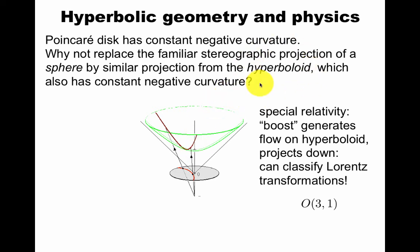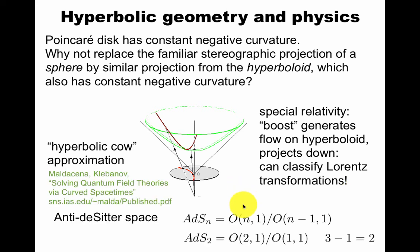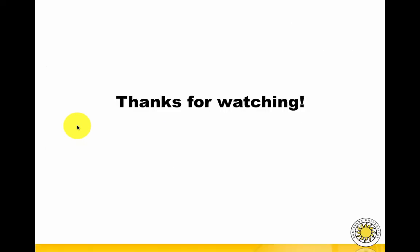In fact, the Poincaré disk, once we accept that it has constant negative curvature, we can have done a projection from a hyperboloid instead of the sphere. You get the Lorentz group this way, as is discussed in great detail on the Wikipedia page about the Poincaré disk. You can go even further and say I can form a homogeneous space by forming equivalence classes in this Lorentz group. That gives me anti-de Sitter space, which is used nowadays for the so-called hyperbolic cow approximation or the anti-de Sitter space conformal field theory correspondence. Thanks for watching.